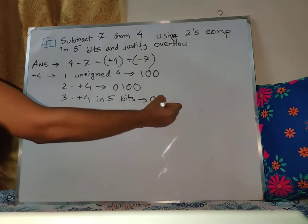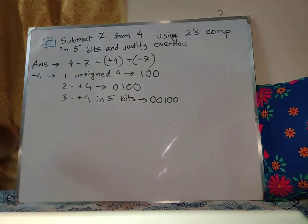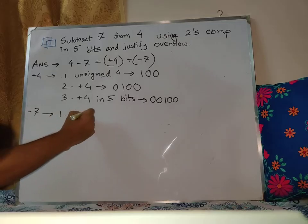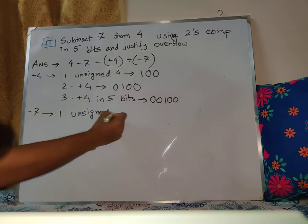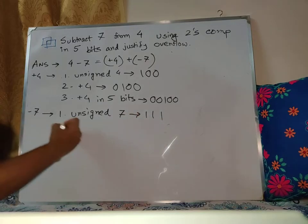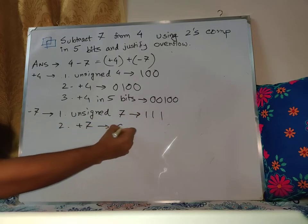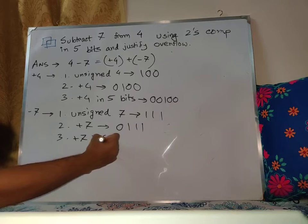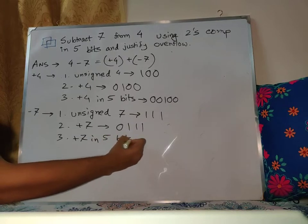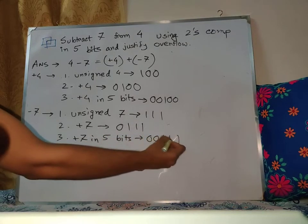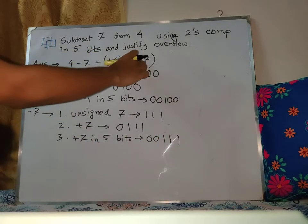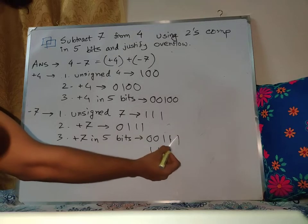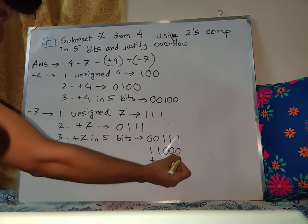Then moving on to minus 7. First we need unsigned 7, just positive 7, not negative 7, just 7 in binary. So 111. Then plus 7 in 5 bits is 00111. But we need minus 7, not just plus 7. So that's why we need to take the two's complement.